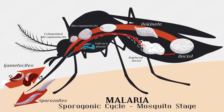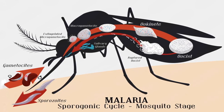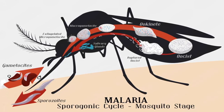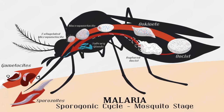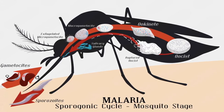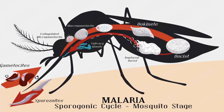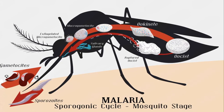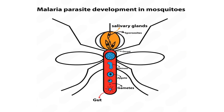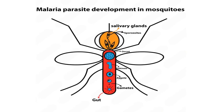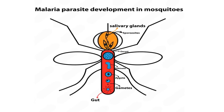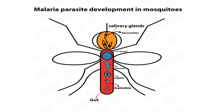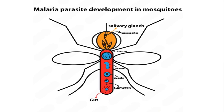In the mosquito cycle, or sexual cycle, when another mosquito bites the infected human, it ingests the gametocyte stages formed during the human cycle. These gametocytes develop into male and female gametes in the mosquito's gut. The gametes fuse to form a zygote, which becomes a motile ookinete. The ookinete penetrates the mosquito's gut wall, forming an oocyst. The oocyst matures and releases thousands of sporozoites, which migrate to the mosquito's salivary glands, making it infectious and ready to transmit malaria to another human.